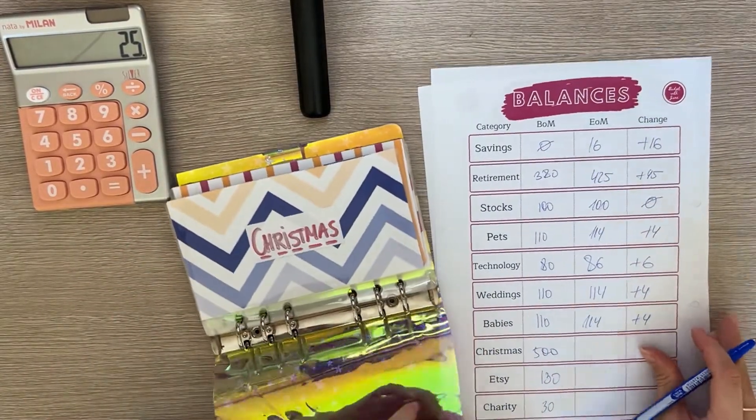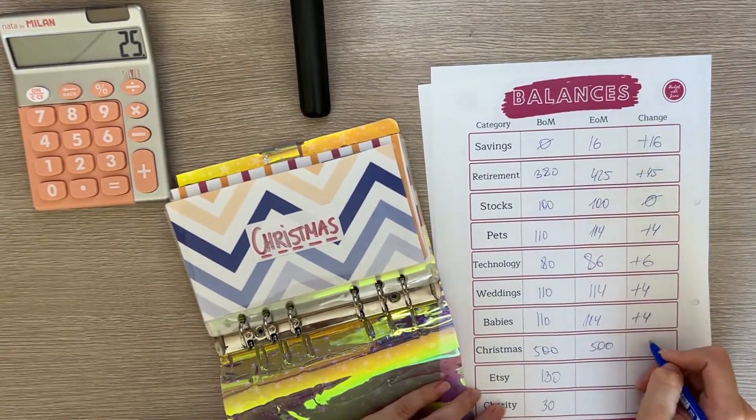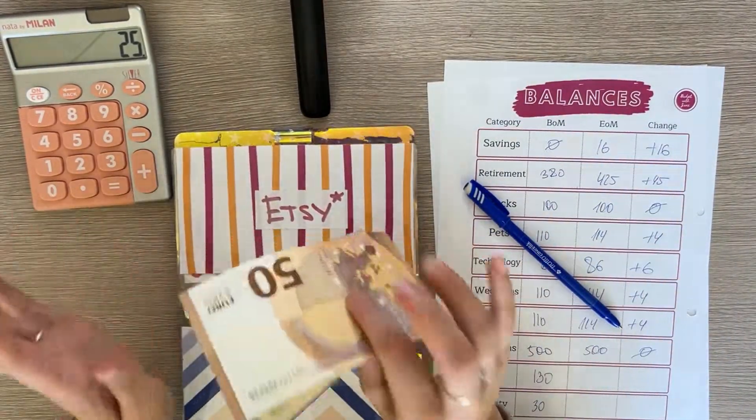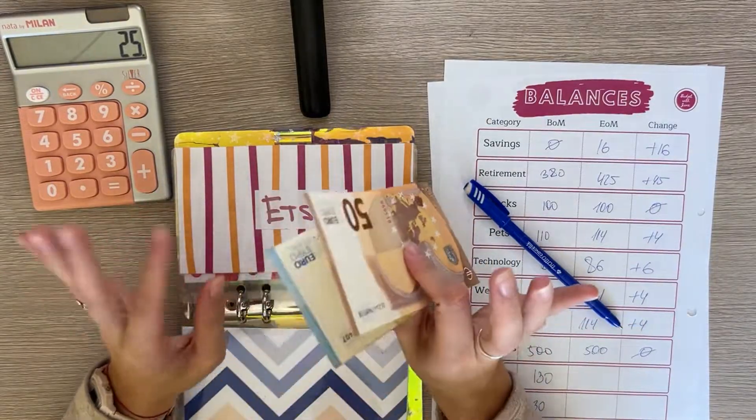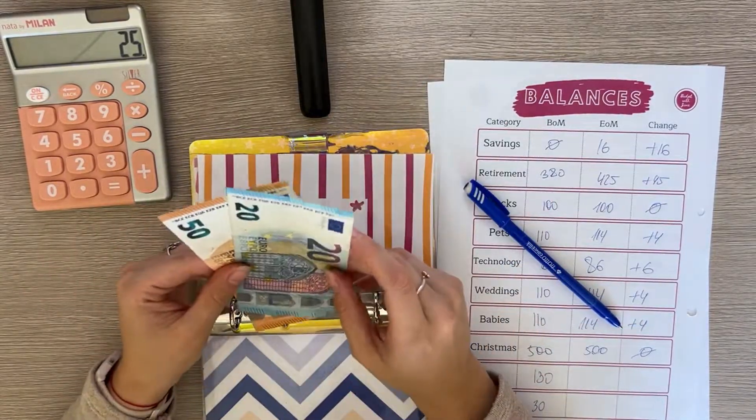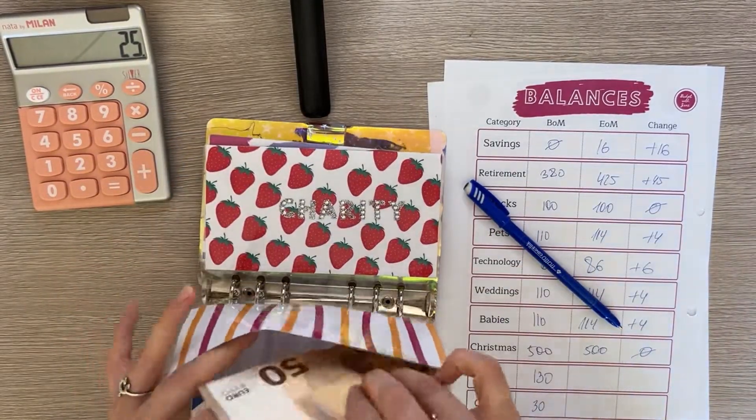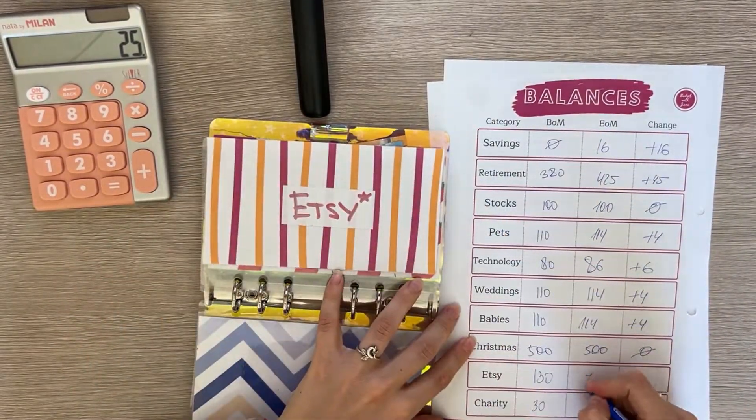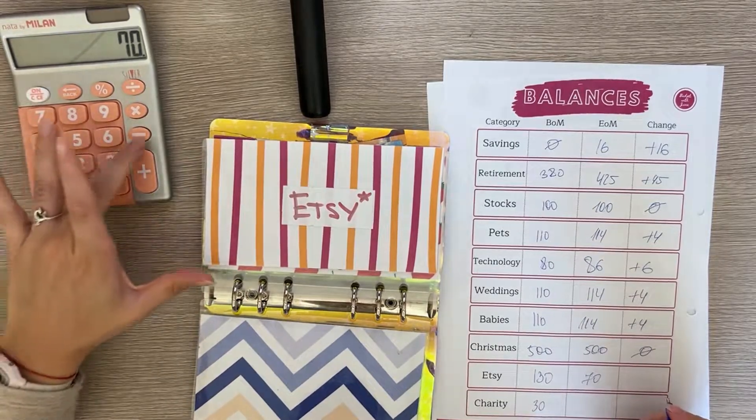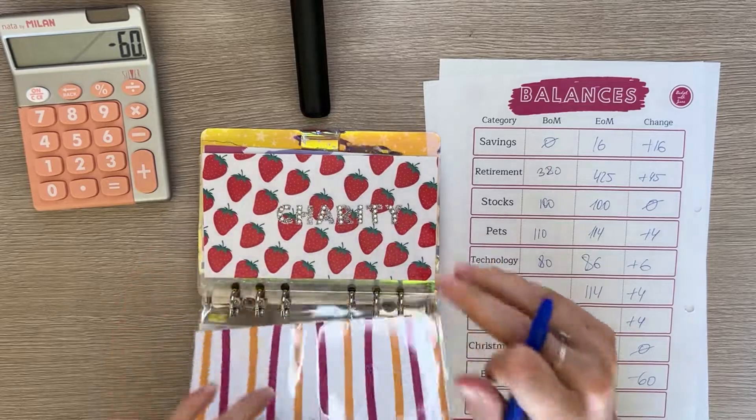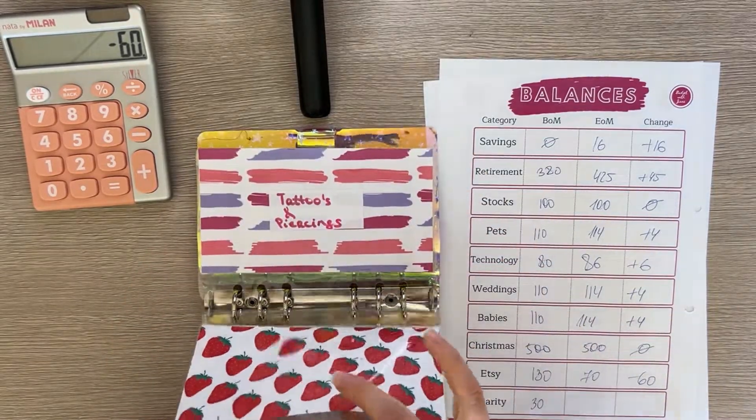Next binder, we're moving on to our savings and miscellaneous portion. Christmas is still fully funded at $500 so the change is zero. Etsy, we did some damage this month. I bought a bunch of stuff that I plan to sell on my Etsy shop. Keep your eyes and ears out for that but it has now $70 and it had $130 so that's a negative $60 change.